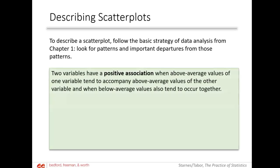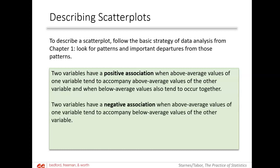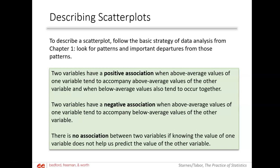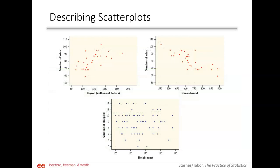To describe a scatter plot, we follow basic strategies from Chapter 1 — looking for patterns and departures from those patterns. Two variables have a positive association when above-average values of one tend to accompany above-average values of the other — as one goes up, the other goes up. Two variables have a negative association when above-average values of one accompany below-average values of the other — as one goes up, the other goes down. There is no association if knowing the value of one variable does not help you predict the other.